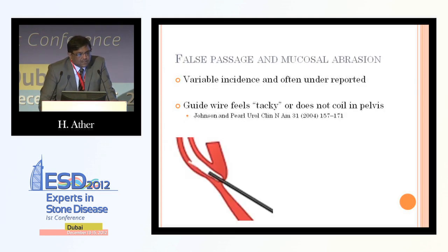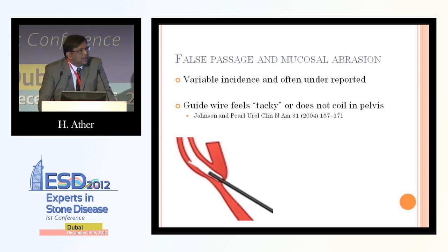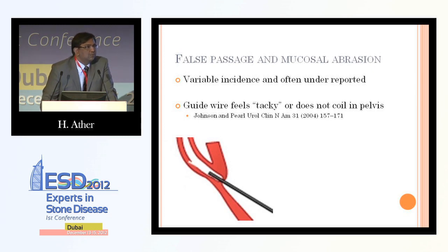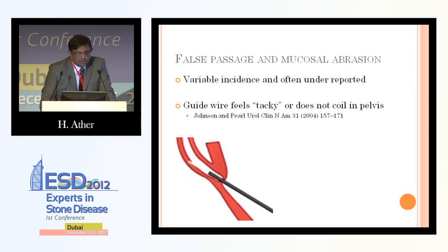False passage and mucosal abrasion are more related to the guidewire. Margaret Pearl described a tacky sensation when passing the guidewire, which is different from when the wire is passing freely through the ureteral lumen. On fluoroscopy, you see that the guidewire, although going up, is not coiling into the renal pelvis as it should.